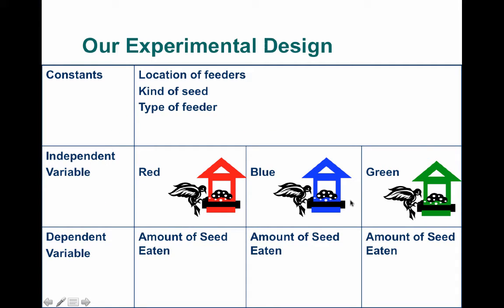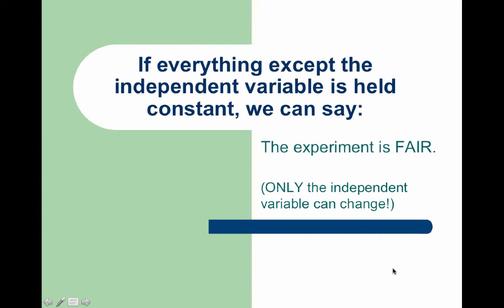Here is our experimental design. Our constants are location, the kinds of seed, and the types of feeders. The independent variable is the color of the feeders, and the dependent variable — what we measure at the end — is the amount of seed eaten. If we hold everything besides that independent variable constant, then and only then can we say our experiment is fair. Only the independent variable can change.